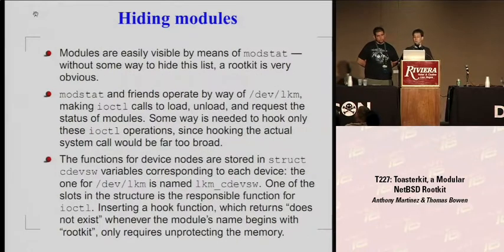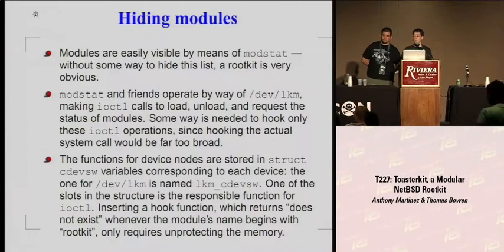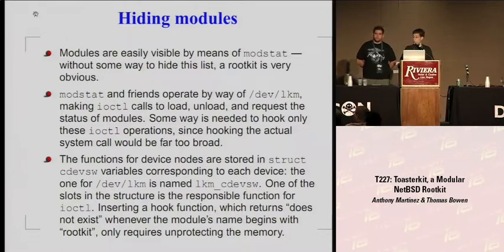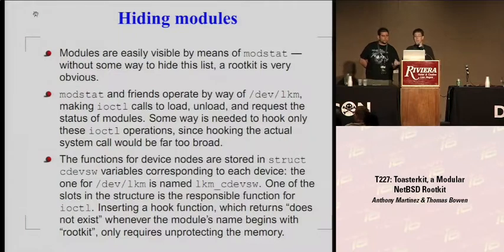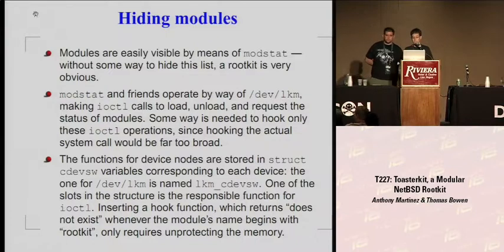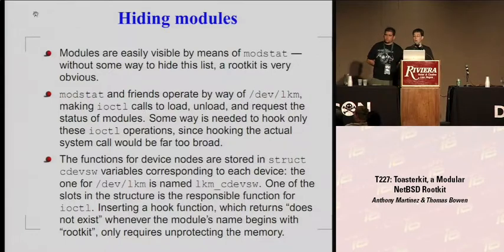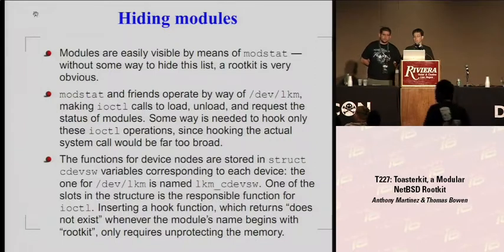Once we got that finished, we could hide modules. If you go through and type mod stat and there's a bunch of modules labeled rootkit, that's a dead giveaway. The dev.lkm file, which is where module information comes from, is on the file system — and if we delete that, that's another dead giveaway. So there's a function that provides the information, and we hook it in a similar way to doing a system call. When it's asked about modules whose name contains 'rootkit,' it says they don't exist.